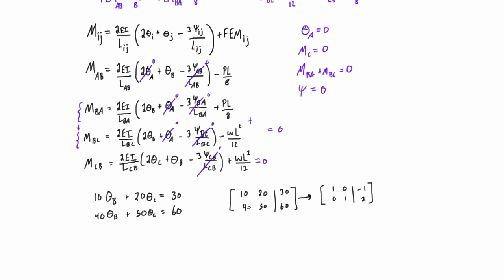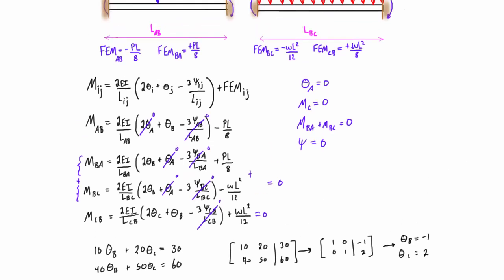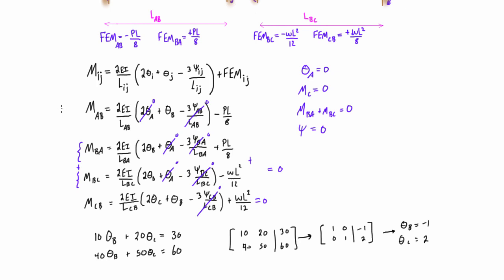After solving, you'll get values like θ_B = −1 and θ_C = 2 — you'd get the same result by substitution. Then you plug those values back into all four slope deflection equations for M_AB, M_BA, M_BC, and M_CB. That gives you actual moment values in kilonewton-meters at the ends of each span.